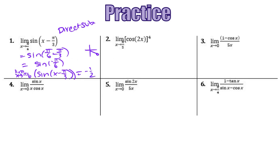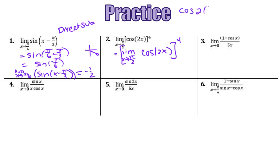For number 2, we can also use direct substitution. The limit as x approaches pi over 2 of cosine of 2x, all raised to the fourth power. Cosine of 2 times pi over 2 is cosine of pi, which is negative 1. So we raise negative 1 to the fourth power, and negative 1 to the fourth power is 1.